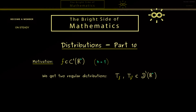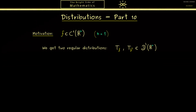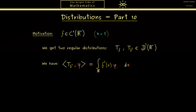Now I want to do a very important calculation in the theory of distributions. We want to look at what happens when we apply T_{f'} to a test function φ, using the duality pairing. Because we have a regular distribution, this is simply an integral of f'(x) times φ(x) — not a complicated integral since we are one-dimensional in this example.